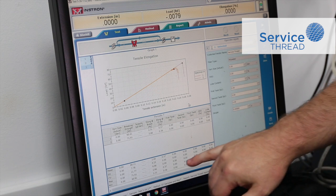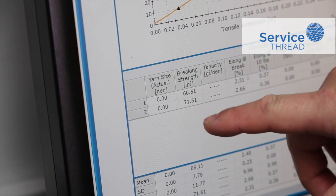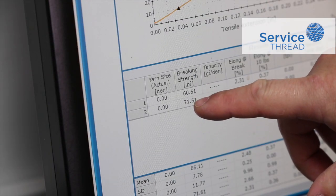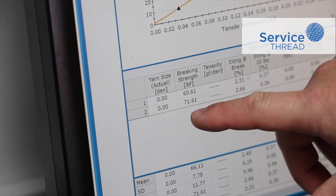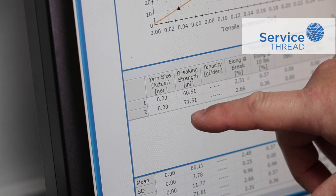Our results show the difference between the flat yarn and the twisted yarn. The flat yarn broke at 60.61 pounds, whereas the twisted yarn broke at 71.61 pounds.